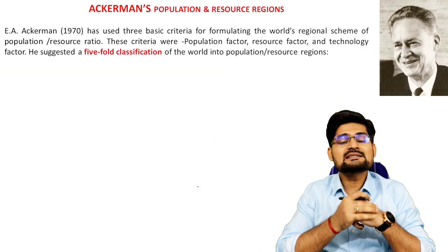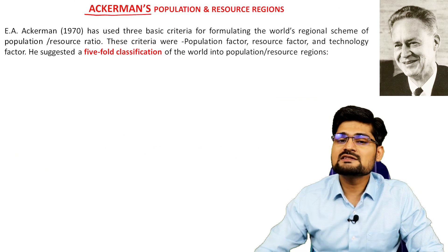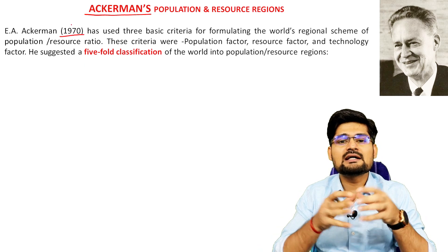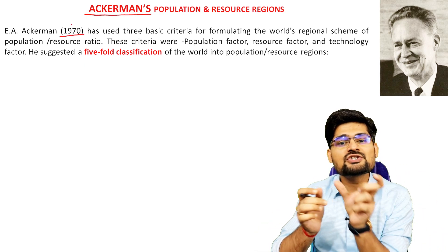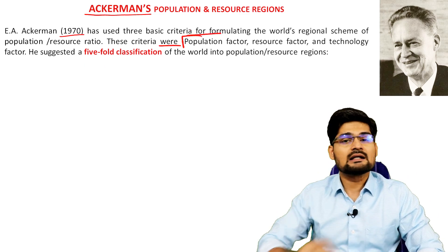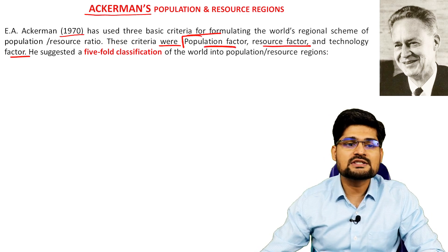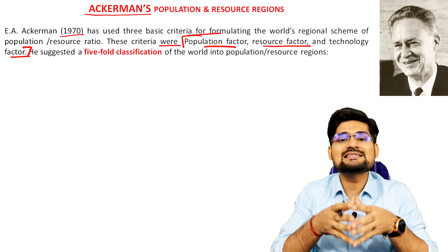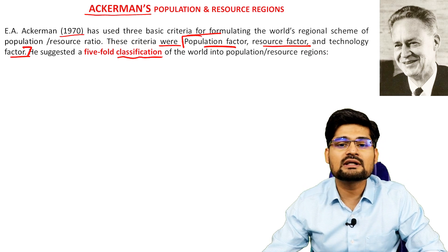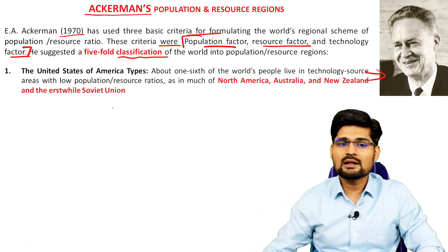To understand this in a theoretical manner, there is a scholar called Ackerman — an American geographer — who in the 1970s tried to classify regions of the world on the basis of population and resources. The criteria used in this classification are the population factor, resource factor, and technology factor. Using these three factors he classified the world into a fivefold classification of population-resource regions.